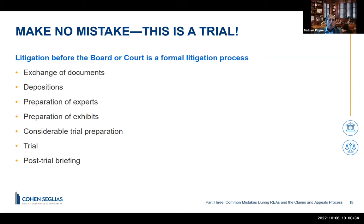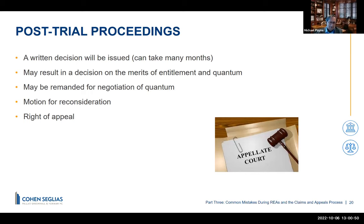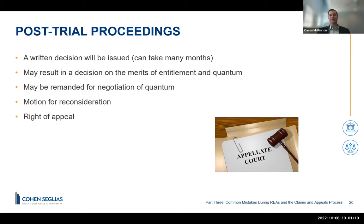Even the actual decision may not represent the end of the process. You might get a decision on just entitlement, not quantum — that's common at the Board of Contract Appeals. They might say the contractor encountered a differing site condition and instruct the parties to go figure out what's owed, then negotiate. If you can't come to an agreement, you may be back before the board trying the quantum or damages portion. You might also end up with a motion for reconsideration where one party is unhappy with the judge's decision, and you might have to appeal to the Federal Circuit and re-litigate the issues again.